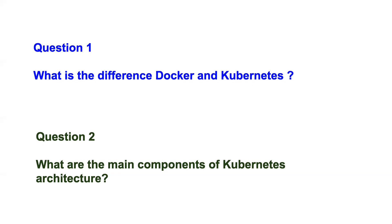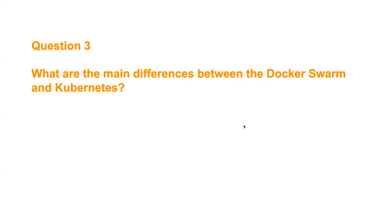Then you have etcd, which is where Kubernetes stores its objects. You also have the kube scheduler, which takes care of scheduling pods. Then there's the controller manager, responsible for controllers in Kubernetes, and the cloud controller manager. On the node side, you have kubelet, which is responsible for running containers in a pod; kube-proxy, which handles networking; and the container runtime — Kubernetes supports multiple container runtimes like Docker, containerd, or CRI-O.